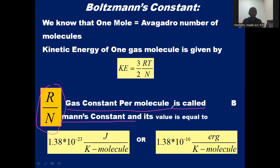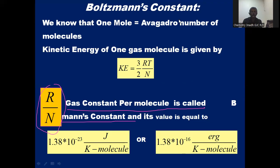Gas constant per molecule is called Boltzmann's constant. This value is equal to 1.38 × 10⁻²³ joule per kelvin per molecule, or 1.38 × 10⁻¹⁶ erg per kelvin per molecule. So Boltzmann's constant is the gas constant per molecule, written as R/N, where R is the universal gas constant and N is Avogadro's number. It is denoted by k (or kappa).